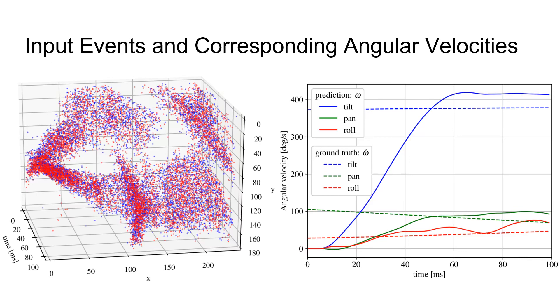Tilt, pan and roll are predicted simultaneously, but are only close to the ground truth after 50 milliseconds.